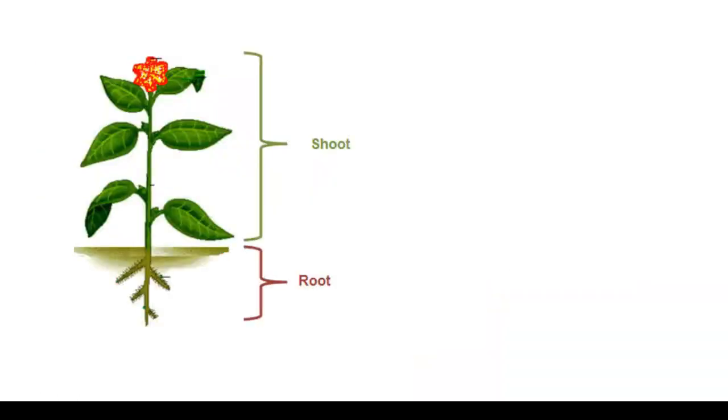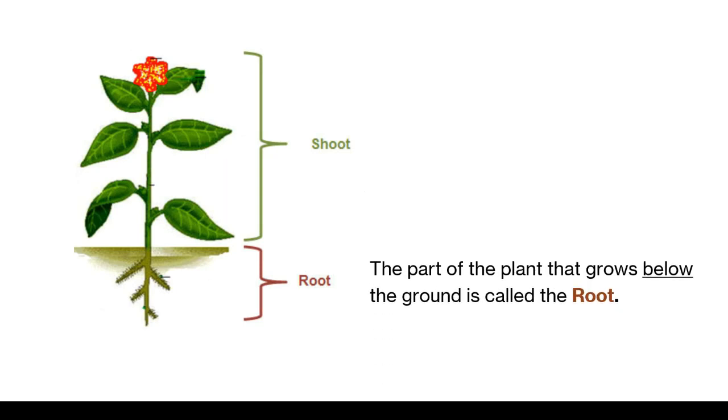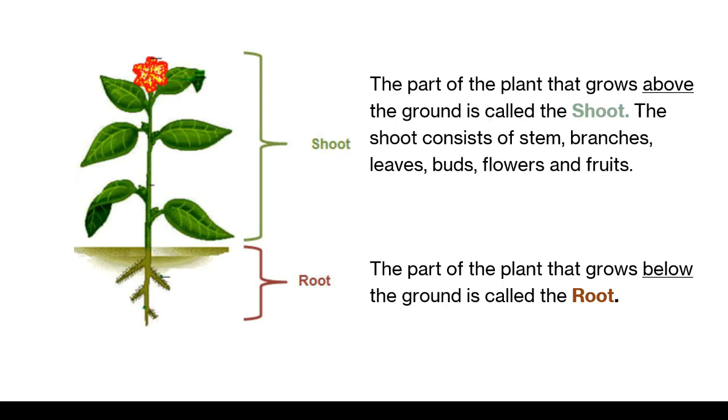Most plants have two main parts. One part of the plant is below the ground and the other part is above the ground. The part that grows below the ground is called the root. The part that grows above the ground is called the shoot. The shoot consists of stem, branches, leaves, buds, flowers and fruits.